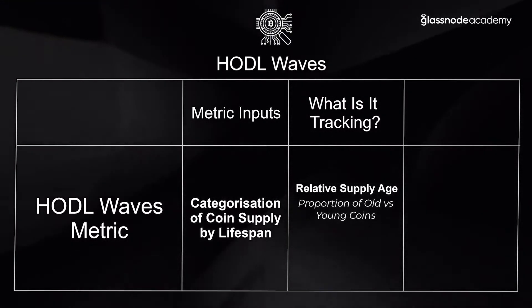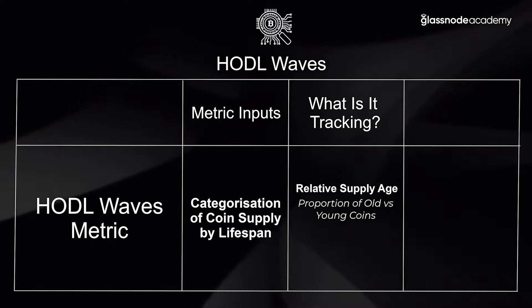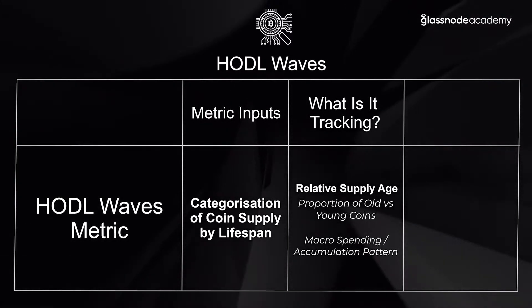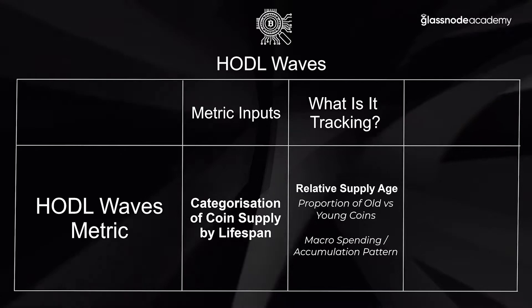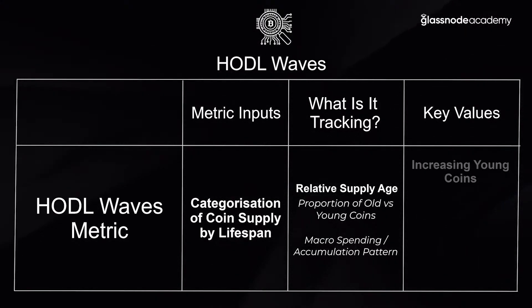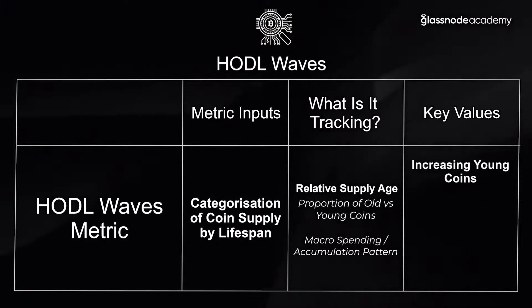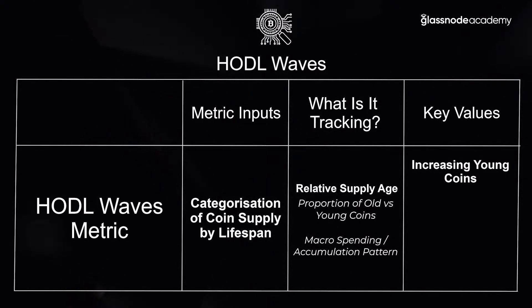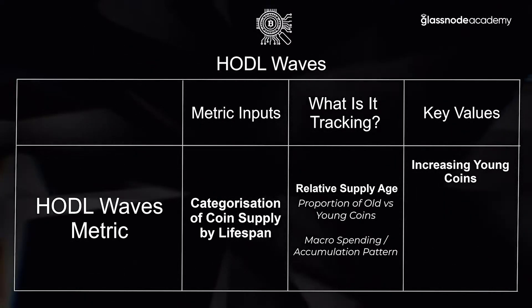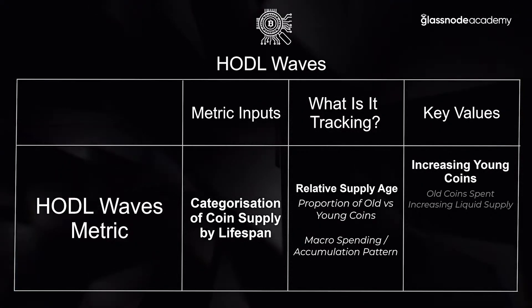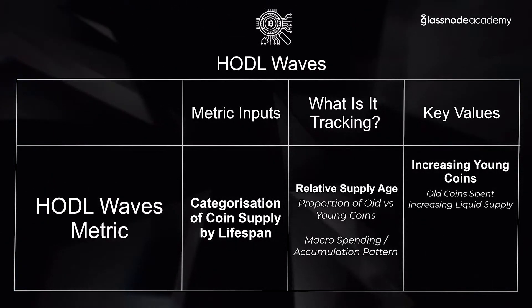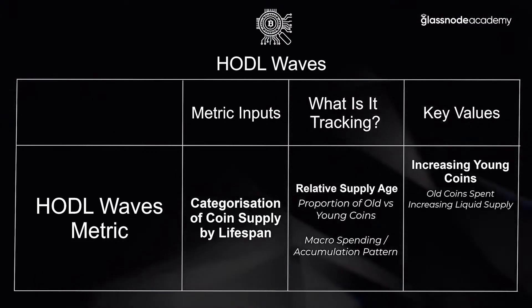When we see changes in the trend of these different bands, it gives us a view of the macro spending or accumulation patterns going on in the market. A key value we're looking for is if the younger age bands are expanding in size and having a large proportion of supply — that's telling us that some of those older coins are being spent, turning from old to young and increasing that liquid supply.